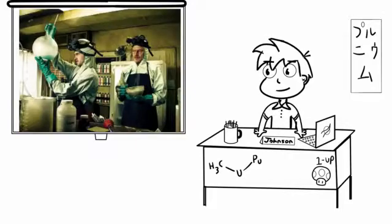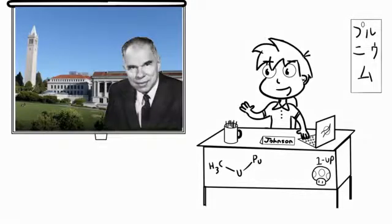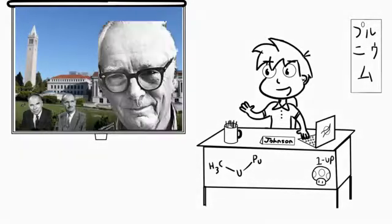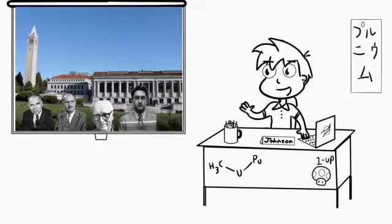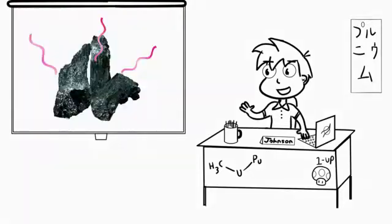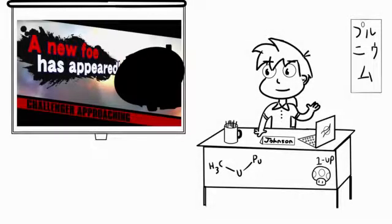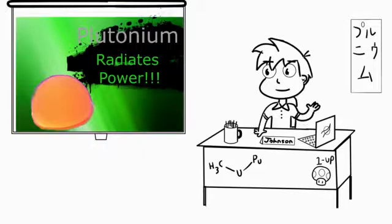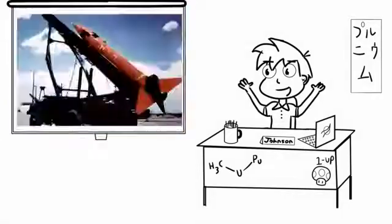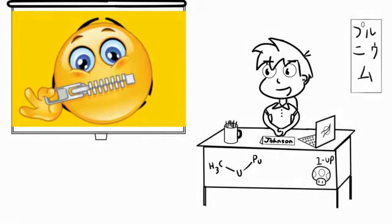Plutonium was first made somewhat on accident by a team of scientists at the University of California, Berkeley. Glenn T. Seberg, Edwin McMillan, Joseph W. Kennedy, and Arthur Wall were researching uranium by pummeling it with deuteron bombardment when they created neptunium. The neptunium then decayed through a process known as beta emissions and left behind a new element that they decided to name after the next planet in line, Pluto. It was quickly discovered that plutonium could be used for all sorts of cool things, like nuclear weapons! Because of its potential threat, the discovery of plutonium was kept a secret until after World War II.